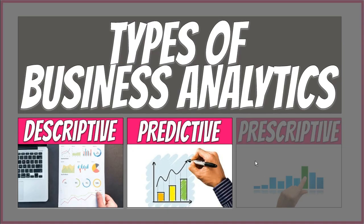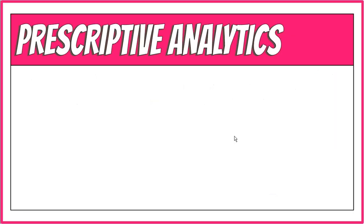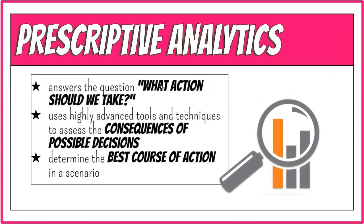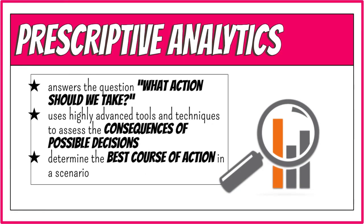The last, but not the least, type of business analytics is prescriptive analytics. Prescriptive analytics answers the question: what action should we take? This state-of-the-art type of analytics builds on findings from descriptive and predictive analytics. It uses highly advanced tools and techniques to assess the consequences of possible decisions and determine the best course of action in a scenario. Prescriptive analytics attempts to quantify the effect of future decisions in order to advise on possible outcomes before the decisions are actually made.